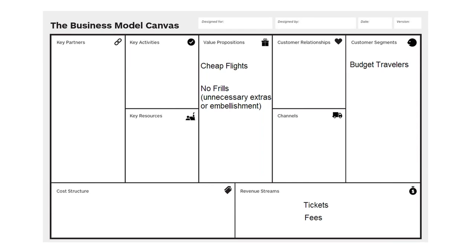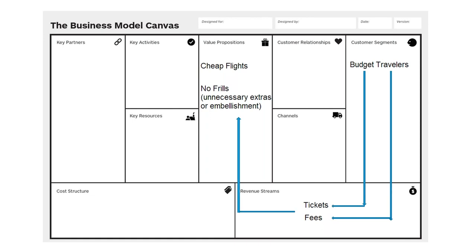Now let's talk about the revenue streams, and there are basically two. The first is ticket sales to budget travelers. The other revenue stream, which also arises from the no-frills proposition, is fees. If budget travelers want a drink, a bite to eat, or an extra suitcase, they need to pay a fee. That turns into an additional revenue stream for Cheapo Airlines — so we have tickets and fees as the two streams.